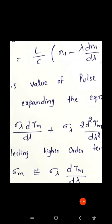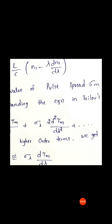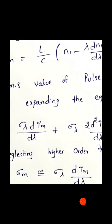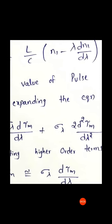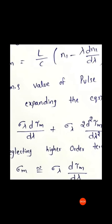The RMS value of the pulse spread, sigma_M, can be obtained by expanding Tm in a Taylor series: sigma_M = sigma_λ · (dTm/dλ) + sigma_λ · (2d²Tm/dλ²) + higher-order terms. By neglecting the higher-order terms, we get the approximation: sigma_M ≈ sigma_λ · (dTm/dλ).